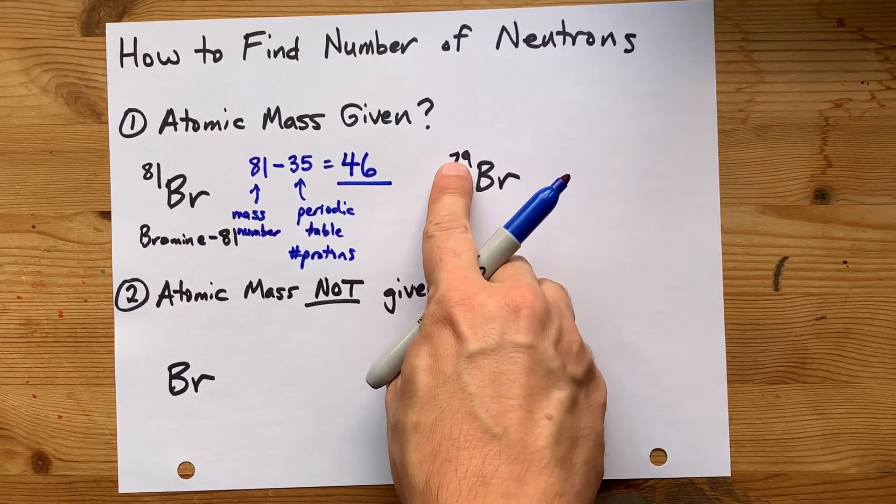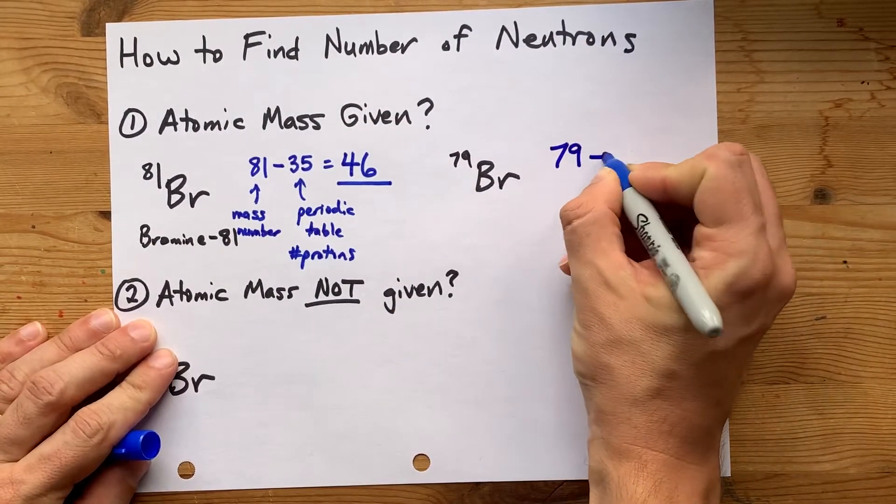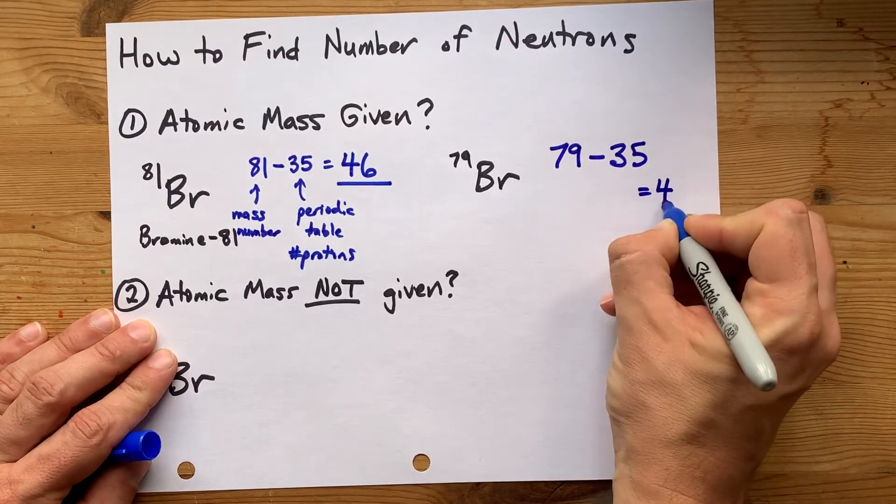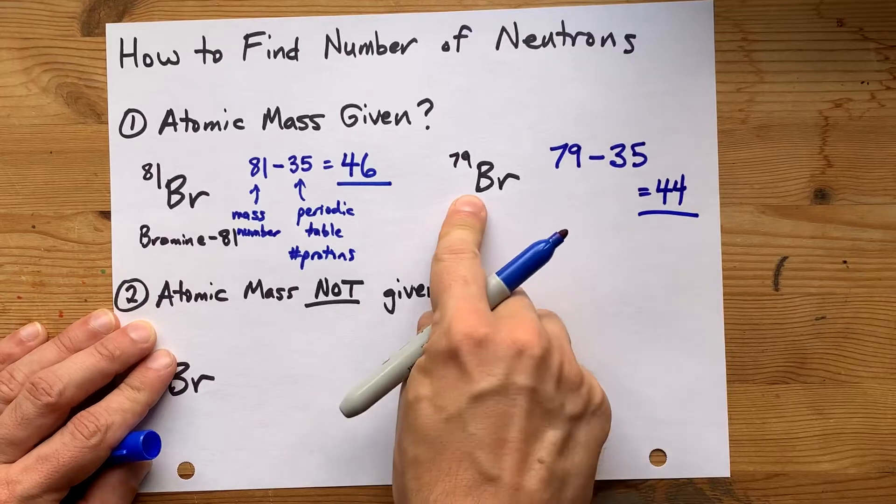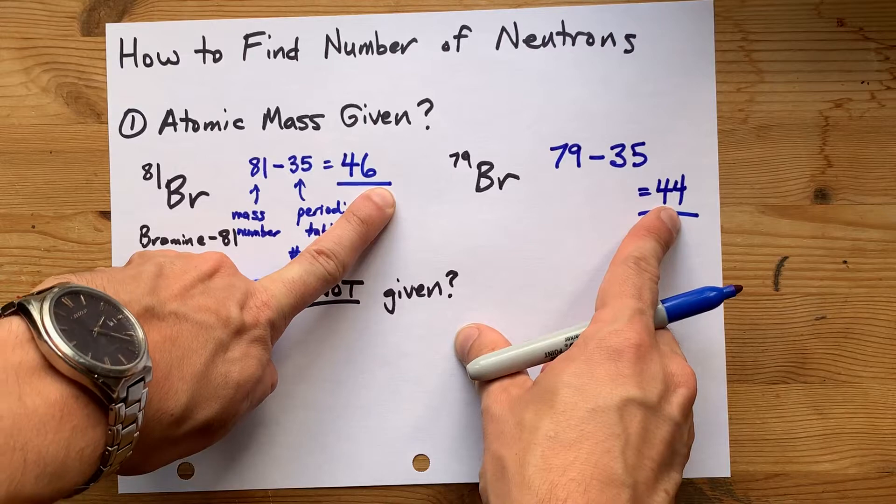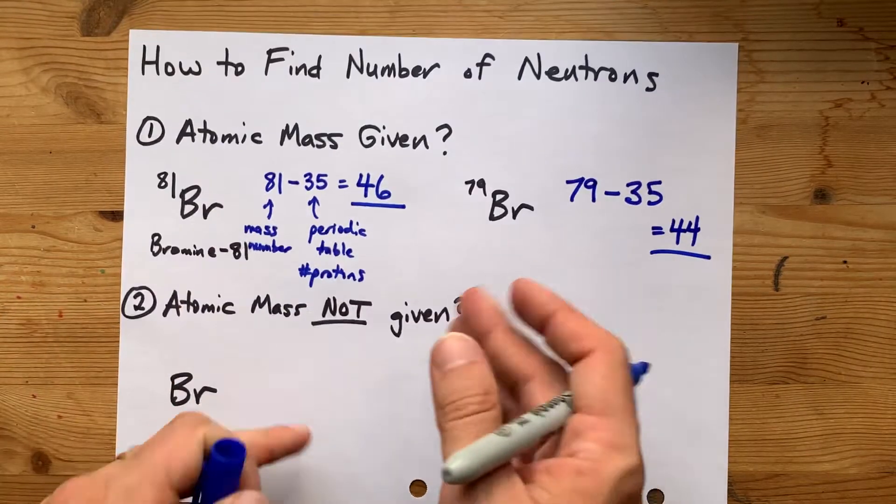But this particle weighs a little bit less. It says 79 minus the number of protons gives you the number of neutrons that are in that particle. The difference between bromine 81 and bromine 79 is the number of neutrons. That's what makes isotopes different.